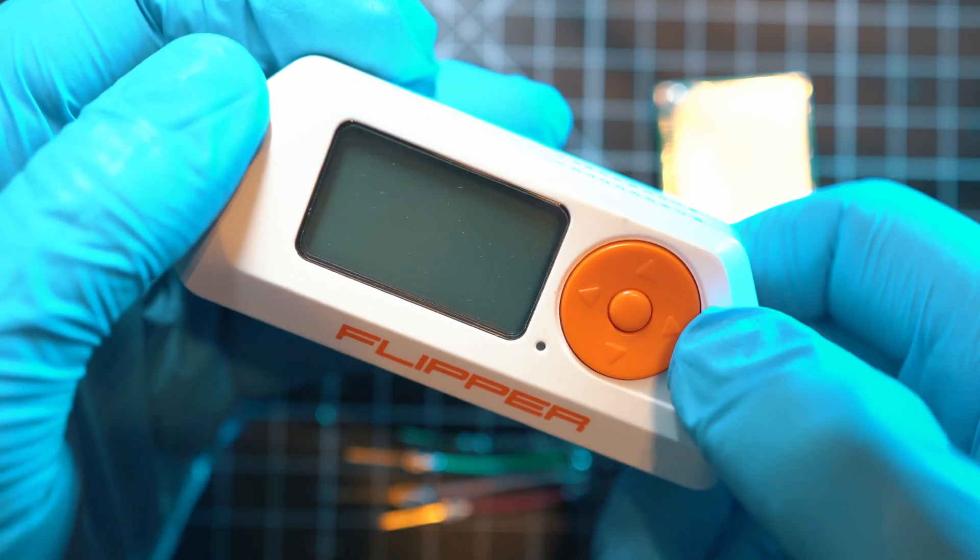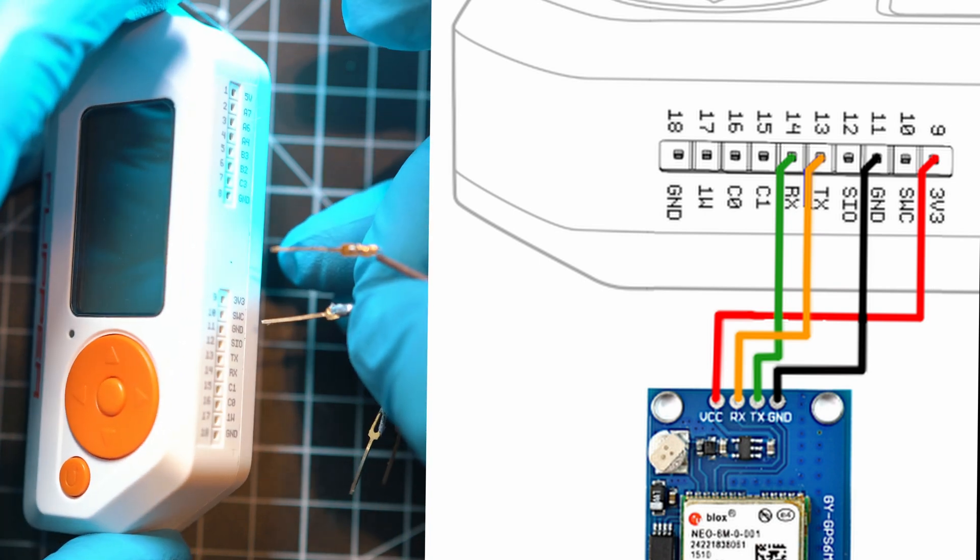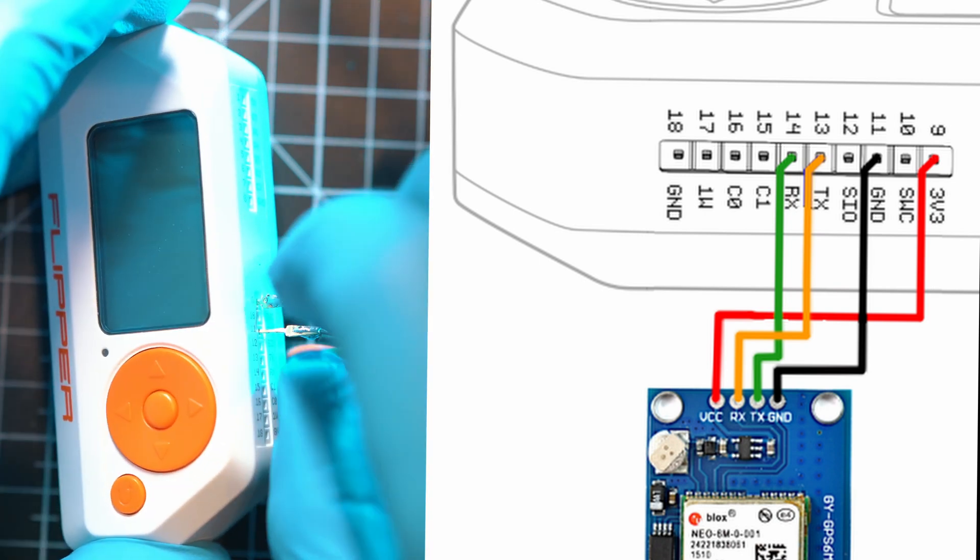Let's turn off the Flipper as you don't want to hot plug any wires and let's connect module to the Flipper Zero.